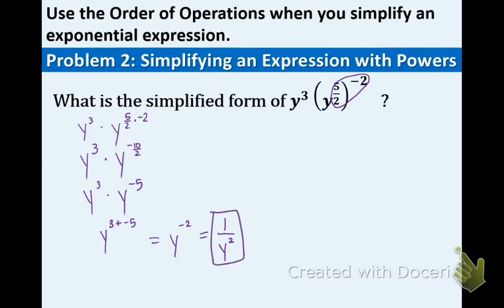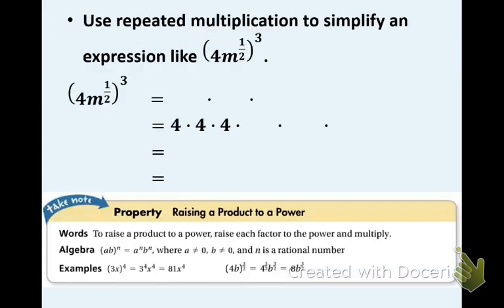I know at first glance this problem looked really weird, but the answer is actually nice and simple. Let's move right along. Feel free to pause at any moment. We are now going to use repeated multiplication to simplify an expression like four M to the one-half, all raised to the third. Remember, this little three tells me that I'm going to be multiplying four M to the one-half three times.